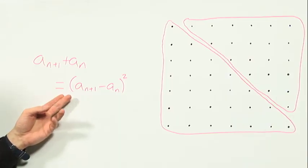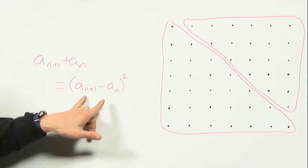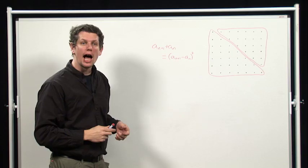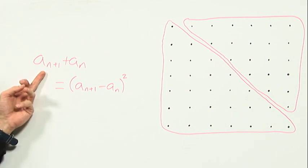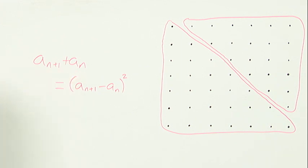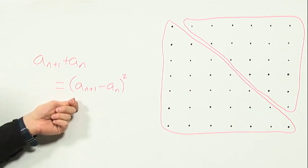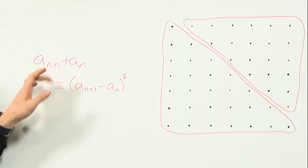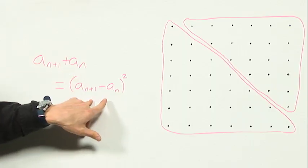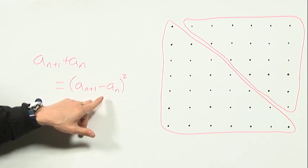So that says that if an and an plus 1 happen to be two consecutive triangular numbers, then this formula will be true. And notice it's true no matter which way round they are. So if an plus 1 is the next triangular number up from an, this will be true. But it's also true if an plus 1 is the next triangular number down because it's symmetric in the two. If we swap the two around, we get the same here. And we also get the same here because if we negate something and square it, we get the same result as if we just square it.